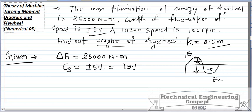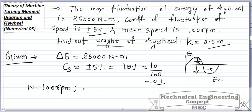So Cs can be written as 10 by 100, or 0.1. The mean speed given is n equals 100 RPM, and k is given as 0.5 meters.